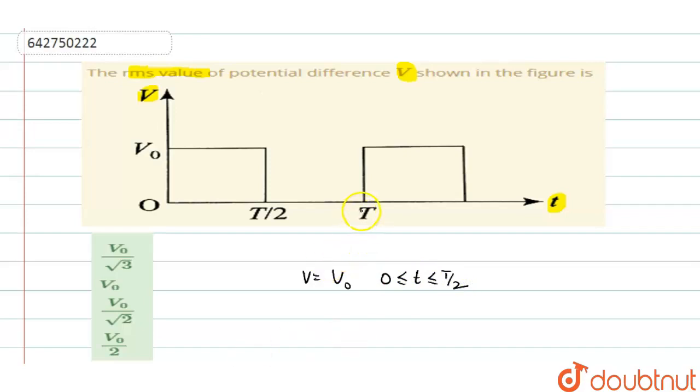In the next part, from T/2 to T for one complete cycle, you have to take it from 0 to T. So the remaining half cycle from T/2 to T, there is no wave. That is 0.